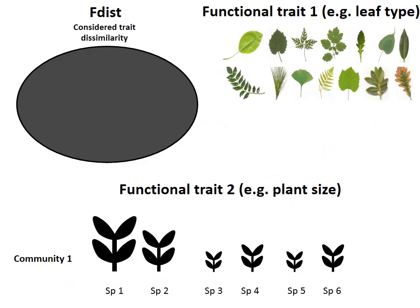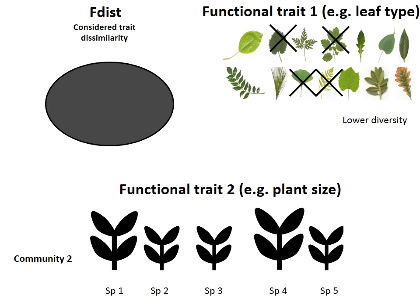Imagine that we have a community or pool of species with very different leaf types or plant sizes. Here we represent the extent of such diversity by the size of an oval shape reflecting trait dissimilarities. Imagine then that some species get lost, or that species are more functionally similar in their size and the diversity in traits decreases. Hence, the size of the oval shape also decreases.